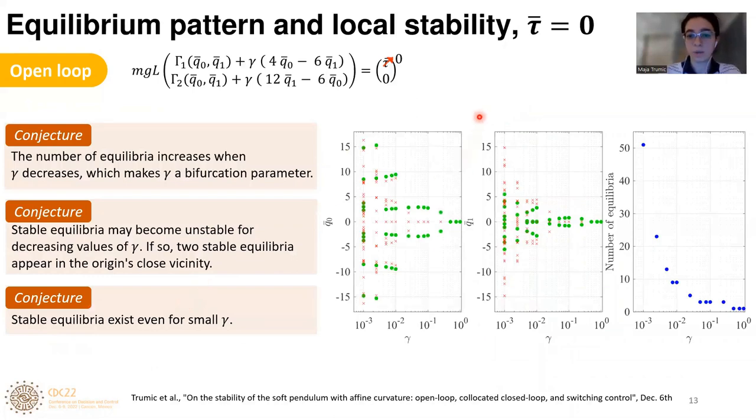Here we come to the numerical analysis of this system. If we take different values of gamma and calculate the number of equilibria and their stability, we can observe three things. First, the number of equilibria increases as gamma decreases. Second, once a stable equilibrium can, for smaller value of gamma, become unstable. However, in that case, two stable equilibria appear in the vicinity of this unstable equilibria, which implies that our system is a safe system. Third, a stable equilibria exists even for small gamma.